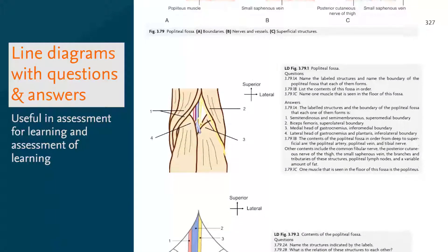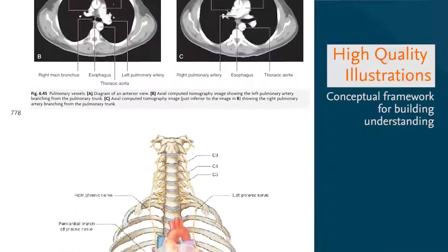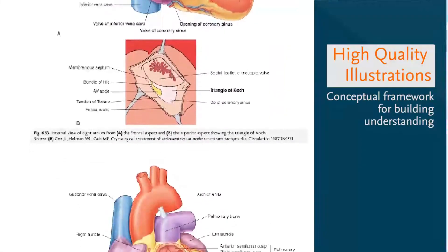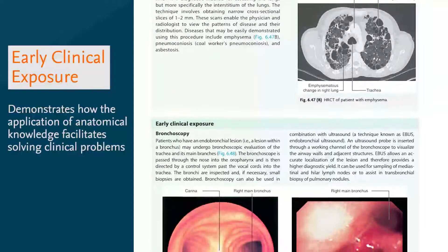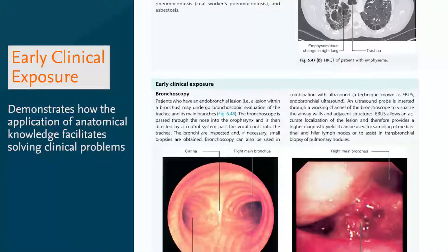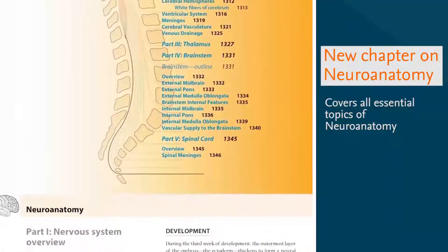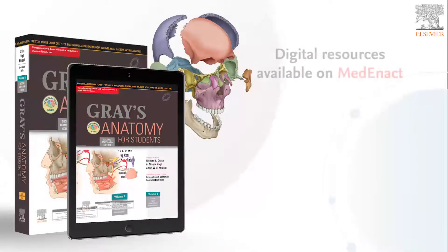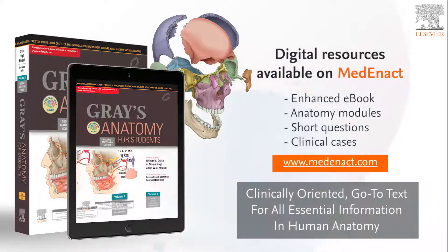This edition makes learning impactful with line diagrams accompanied with questions and answers, and original vibrant illustrations to assist in understanding and comprehension of the anatomy. Early clinical exposure sections are concise descriptions of how the application of anatomical knowledge facilitates solving clinical problems. Neuroanatomy introduces the basic structures and functions of the individual and systemic components of the human nervous system. This edition is supplemented with an enhanced e-book and digital ancillaries. Gray's Anatomy for Students — building a legacy of anatomical excellence.